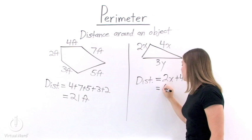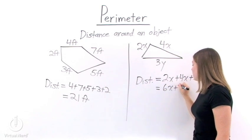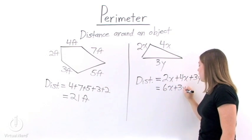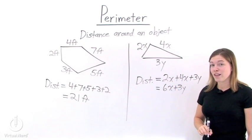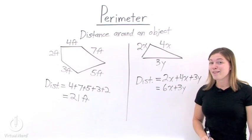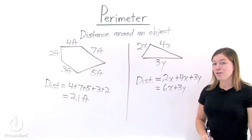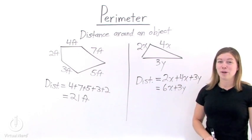so we combine those together to get 6x. But 6x and 3y are not like terms, so we can't combine them. That means that the perimeter around this triangle is 6x plus 3y.